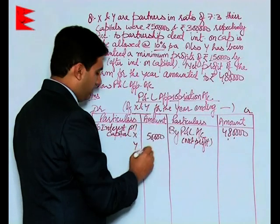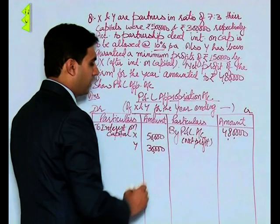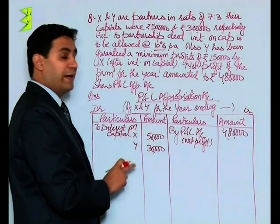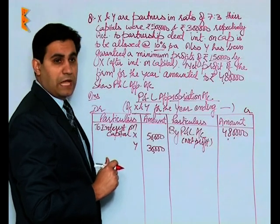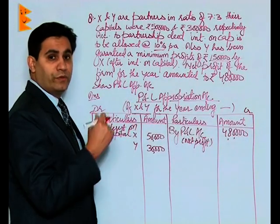For X it is 10% of 5 lakh which comes to 50,000. For Y it comes to 10% of 3 lakh which is 30,000. Now students, 80,000 has been provided by way of interest on capital. There is no other thing as salary or commission.